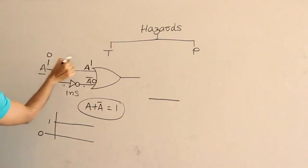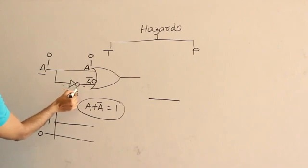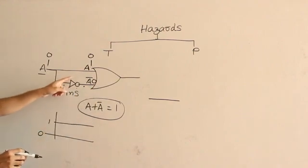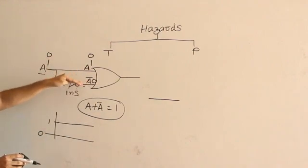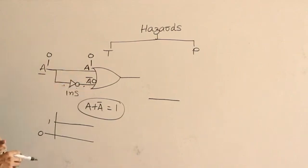Then what happens? The 0 will immediately appear here. But then this 0 in order to pass through it and convert to 1, it is going to take 1 nanosecond. Therefore in that 1 nanosecond, the previous 0 for A prime is going to be there before it gets converted to 1.